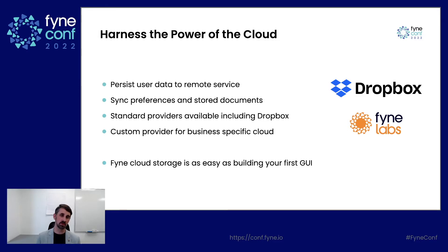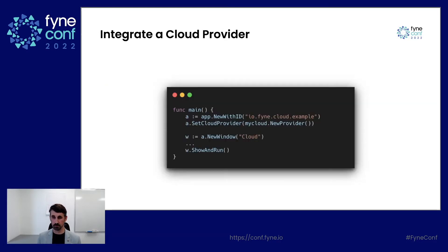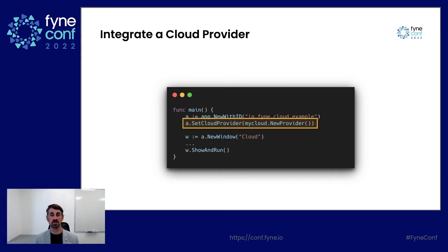So let's jump into a little bit of code here. How would you integrate a cloud provider, assuming you find the one you were looking for, into your application? Well, here we have our application main — it probably looks quite familiar. We're setting up an app, creating a new window, and running it. The key difference here is we've called Set Cloud Provider. It's one line of code that's changed this from a local data-stored application to a cloud-stored data application.